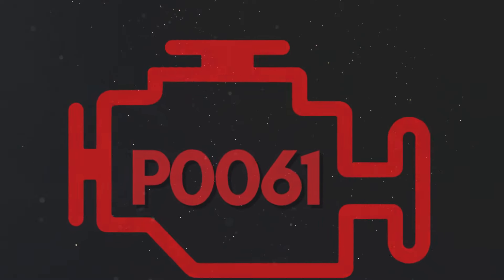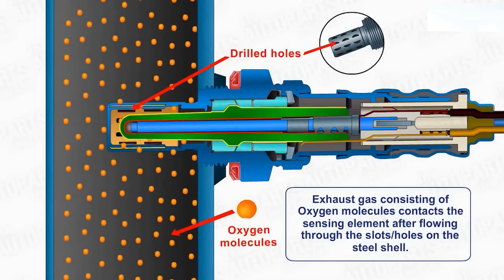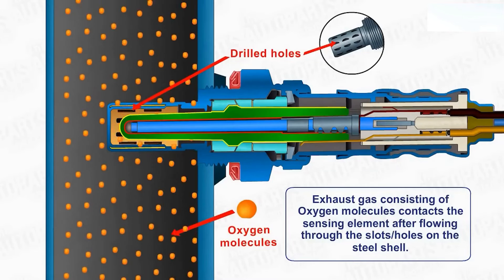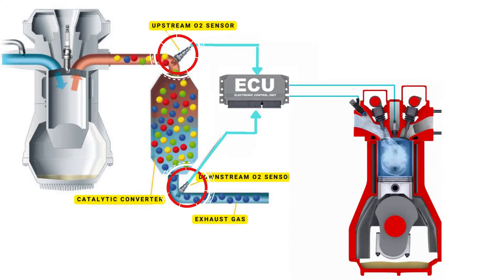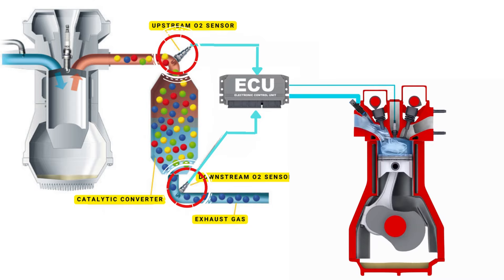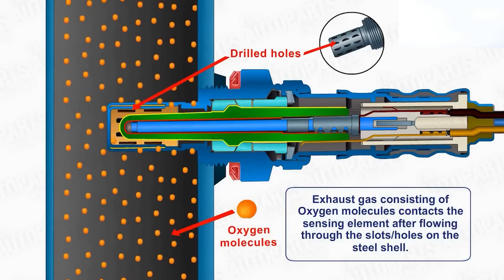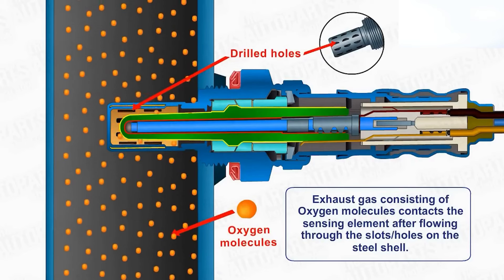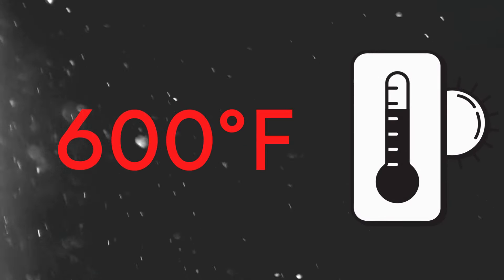Now let's learn why P0061 was triggered. Your vehicle's oxygen sensor plays a vital role in monitoring the oxygen content in the exhaust gases. It sends this data to the ECU, which then uses it to maintain the optimal air-fuel ratio. The ECU controls the air-fuel ratio by adjusting the timing of the engine's valves, allowing just the right amount of air and fuel to enter the combustion chamber. An oxygen sensor won't function correctly until it's heated to a certain temperature — around 600 degrees Fahrenheit for conventional sensors.